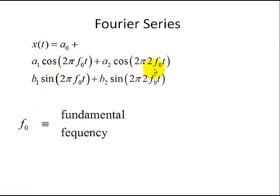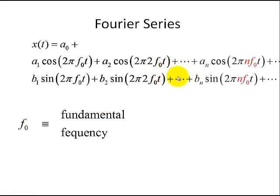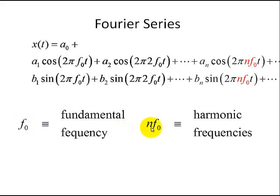We're going to add some more components — in this case, the second harmonic. The second harmonic is just twice the fundamental frequency. Then we'll finally add a lot more cosine and sine functions to make a close approximation of our periodic signal. In the example we'll be going through, it's a square wave. nf0 is called the harmonic frequency of the fundamental, where a2 and b2 correspond to the second harmonic, and nf0 is the nth harmonic. An and Bn are the Fourier coefficients of the nth harmonic.